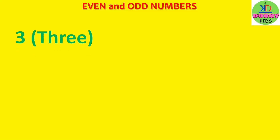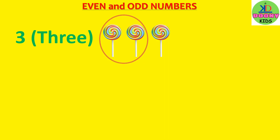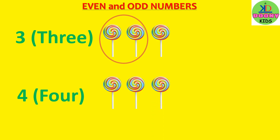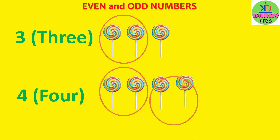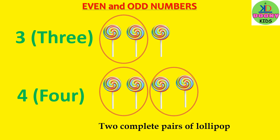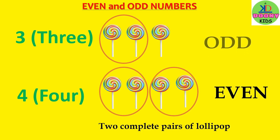3 — 1, 2, 3. Here there are incomplete pairs of lollipop. 4 — 1, 2, 3, 4. There are 2 complete pairs of lollipop. So number 4 is an even number, and number 3 is an odd number.